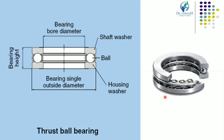The thrust ball bearing carries only the thrust load in one direction and cannot carry any radial load. The use of a large number of balls results in a high thrust load carrying capacity in a smaller space, which is the major advantage of the thrust bearing.